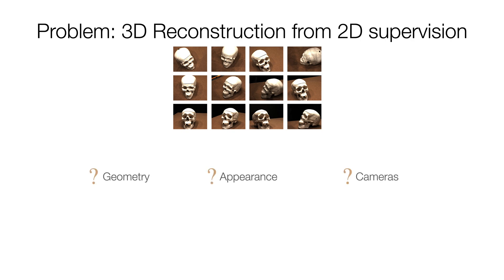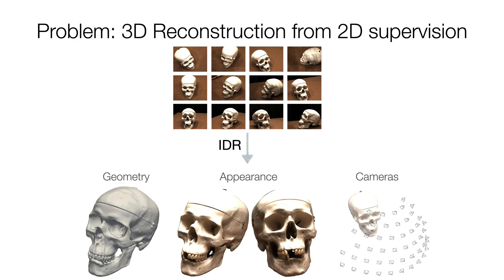We present Implicit Differentiable Renderer, a neural network architecture that simultaneously learns those three unknowns. IDR is able to produce high-fidelity 3D surface reconstruction by disentangling geometry and appearance, learning solely from masked 2D images and rough camera estimates.